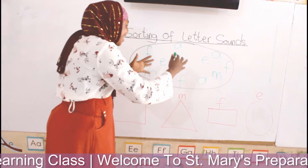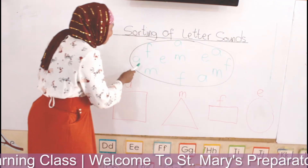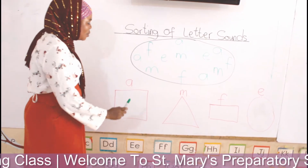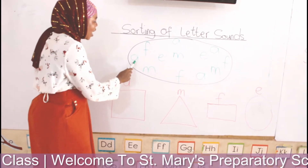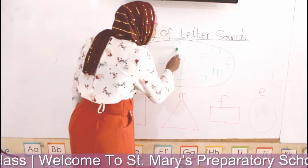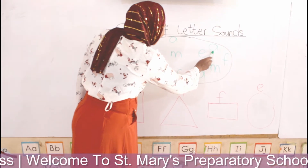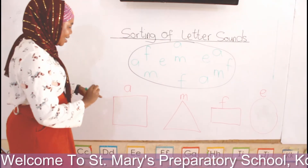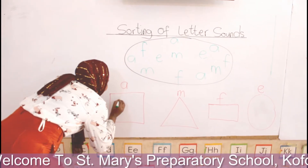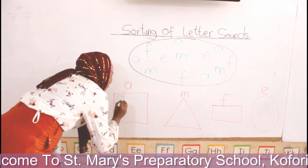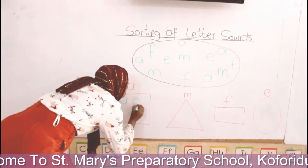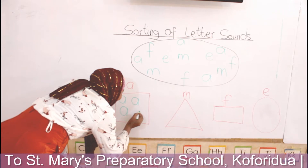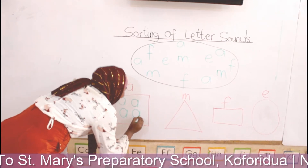Now we are going to sort them into the shapes. The first one is A. Let's look at how many A's we have in the oval, then we write it in the square. The first — one. We have another one — two. We have another one — three. And then we have another one — four. Now we are going to write four A's in the square. A, write. Say it — A. Say and write. A, A. Very good.